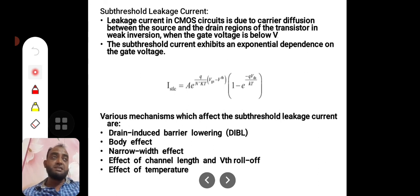This is sub-threshold leakage current. The name itself is indicating, remember, sub-threshold means less than the threshold voltage. In a MOS transistor, the channel forms whenever the gate voltage crosses threshold voltage. Before threshold voltage, it is sub-threshold voltage. In sub-threshold voltage, there is no channel. As there is no channel, we should not expect any charge carrier traveling from drain to source. If any charge carrier is traveling, that is called sub-threshold leakage current. Leakage current in CMOS circuits due to carrier diffusion between the source and drain regions of the transistor in weak inversion when the gate voltage is below VT, threshold voltage.